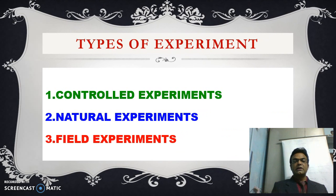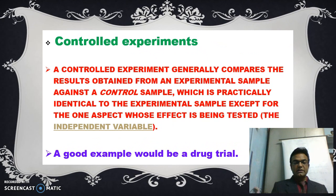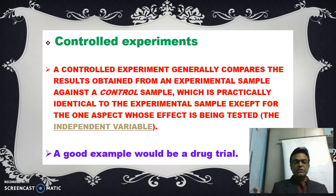Now coming to the topic types of experiments — mainly there are three types: controlled experiments, natural experiments, and field experiments. A controlled experiment generally compares the results obtained from an experimental sample against a controlled sample, which is practically identical to the experimental sample except for the one aspect whose effect is being tested — this is the independent variable; the others are the dependent variables. One of the best examples is a drug trial: if we want to test a drug, we conduct it on a group of people using a controlled experiment.